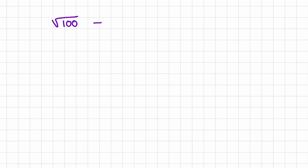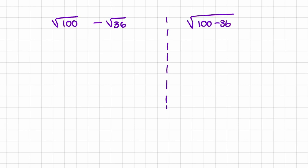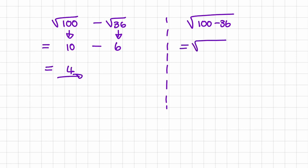Let us look at another example. Let's say we have the square root of 100 minus the square root of 36, and let's compare that to taking the square root of 100 minus 36. So in our first example, the square root of 100 is 10 and the square root of 36 is 6. So it will be 10 minus 6, which is equal to 4. But in our second example, we first do the calculation inside of the square root. So 100 minus 36 is 64.